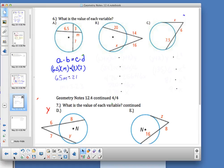So I'm here, I get this, 6.5M is equal to 21, divide, 13.23. Done.